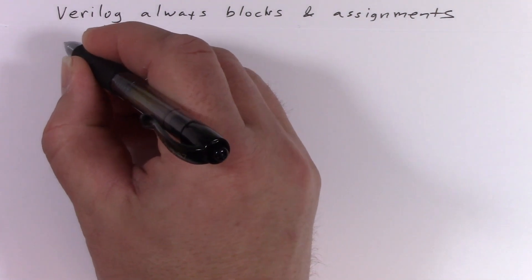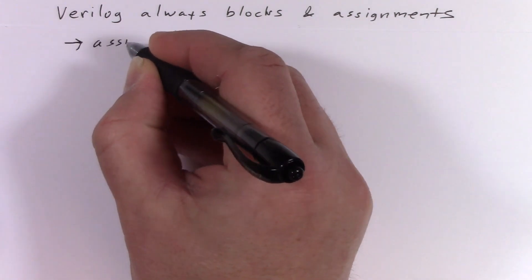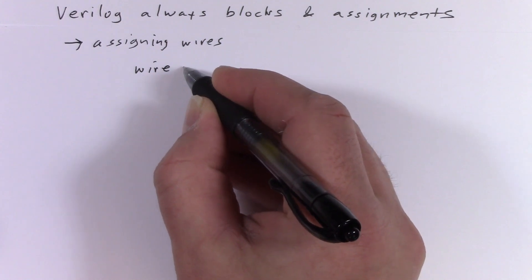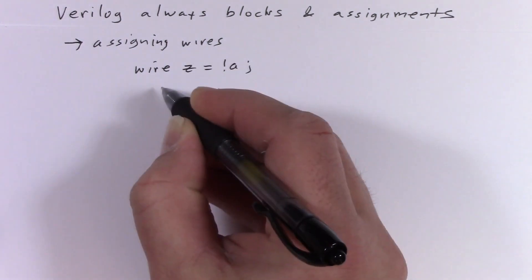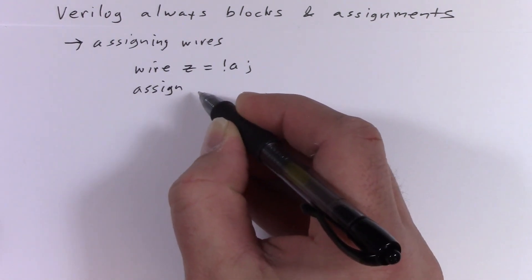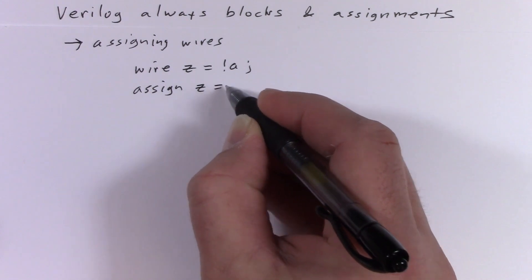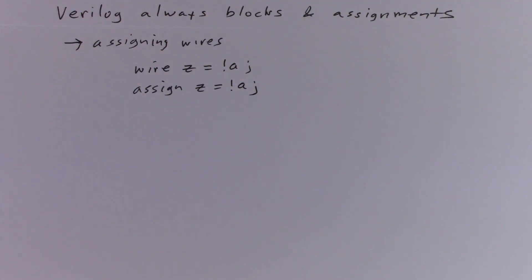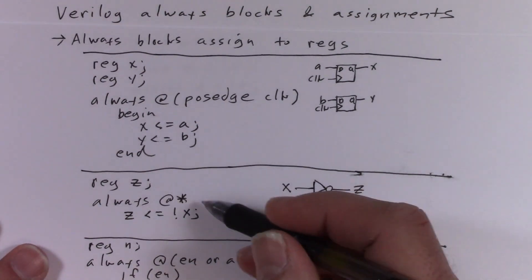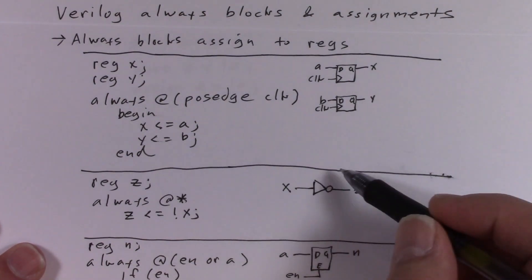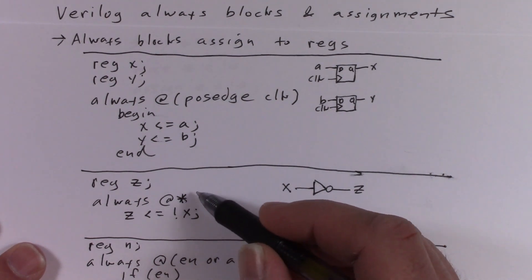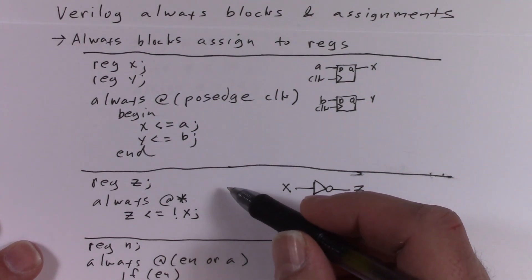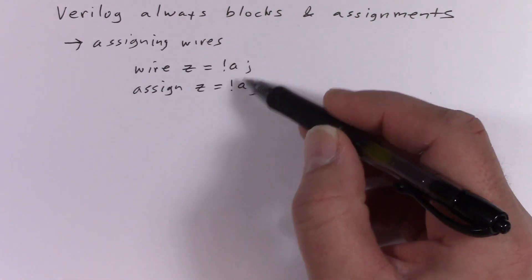So that's how we assign registers. But what about wires? There's a different syntax for wires. There's a so-called continuous assignment, which you can do right in the wire's declaration, or there's an explicit continuous assignment statement. You may wonder why we'd ever use always block syntax for wires — the reason is that inside an always block you can have if statements and case statements, basically much more powerful logic. Whereas with the continuous assignment, you can only have expressions.